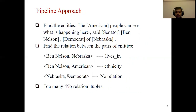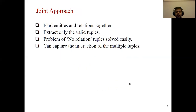Sometimes between two entities there may not be any relation — like Nebraska and Democrat have no relation. So the problem with pipeline approaches is there will be a lot of no-relation tuples. Another approach is the joint approach, where entities and relations are extracted together. It only extracts valid tuples, so the no-relation tuples problem is solved, and it can capture the interaction of multiple tuples.